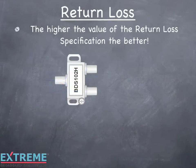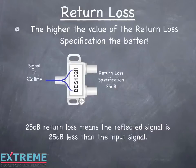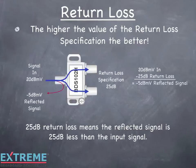Let's look at another example. Here we're showing a two-way splitter with a return loss specification of 25 dB. A 25 dB return loss means that the reflected signal would be 25 dB less than the original input signal. On the input port, we're still feeding with a signal of 20 dBmV. Most of the signal passes through the splitter, but a small amount is reflected back to the signal source. The reflected signal is 25 dB lower than the input signal, at minus 5 dBmV — that is, 20 dBmV in minus 25 dB return loss for a reflected signal of minus 5 dBmV.